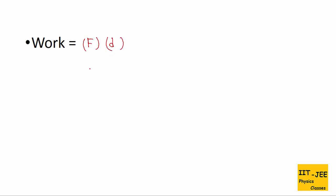Let's find the dimension of work. The formula for work is force times distance. If you remember the dimensional formula of force is M L T⁻², you can plug it in directly along with L for distance, giving M L² T⁻². If you do not know it, you need to break force into F = MA.